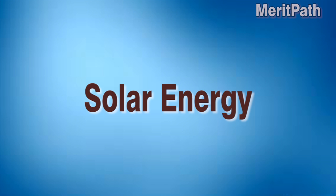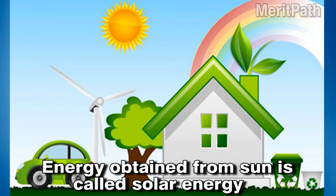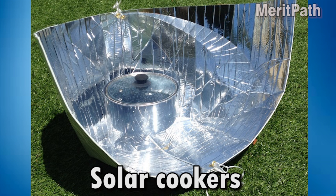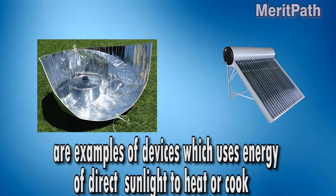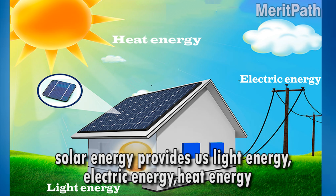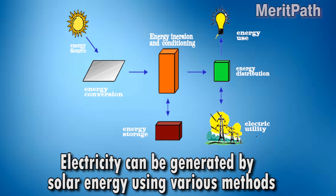Solar energy is the energy obtained from the sun. Solar cookers and solar heaters are examples of devices that use the energy of direct sunlight to heat or cook. Solar energy provides light energy, electric energy, and heat energy. Electricity can also be generated by solar energy using various methods.